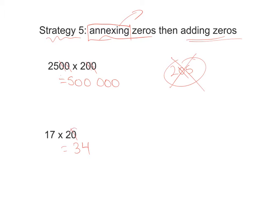Now don't forget, we annexed a zero. So we have to add one zero on at the end. So 17 times 20 is equal to 340. Hope this helps.